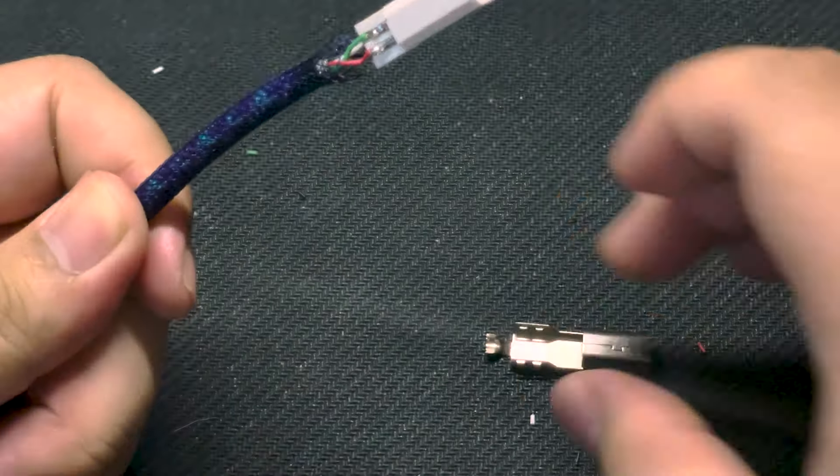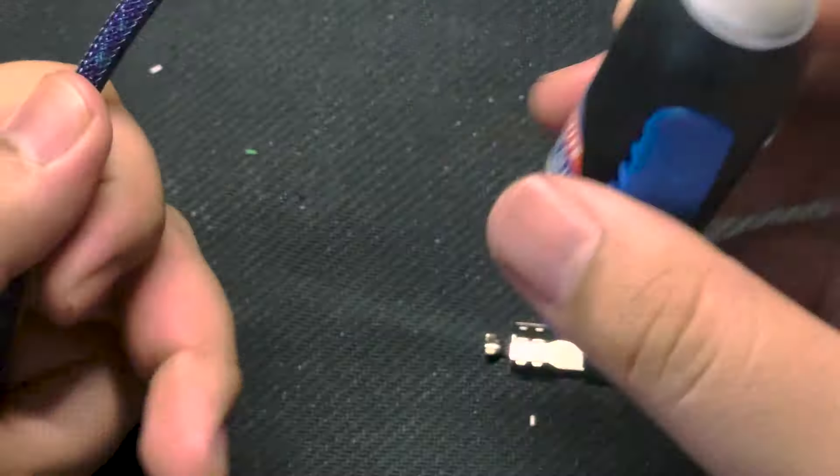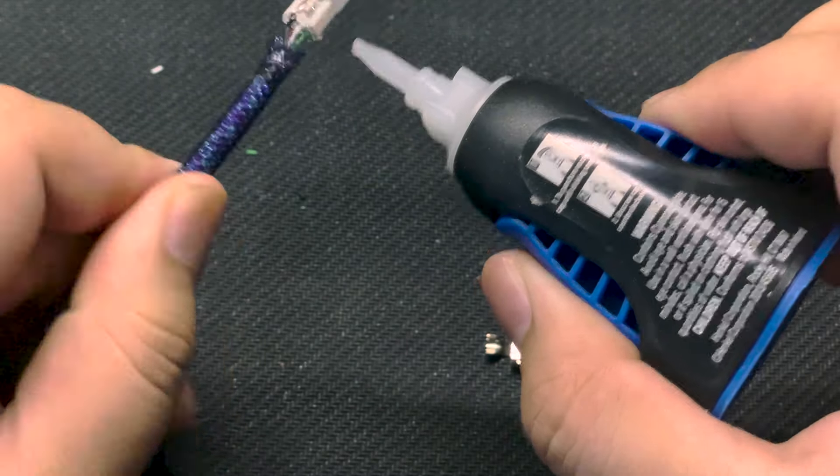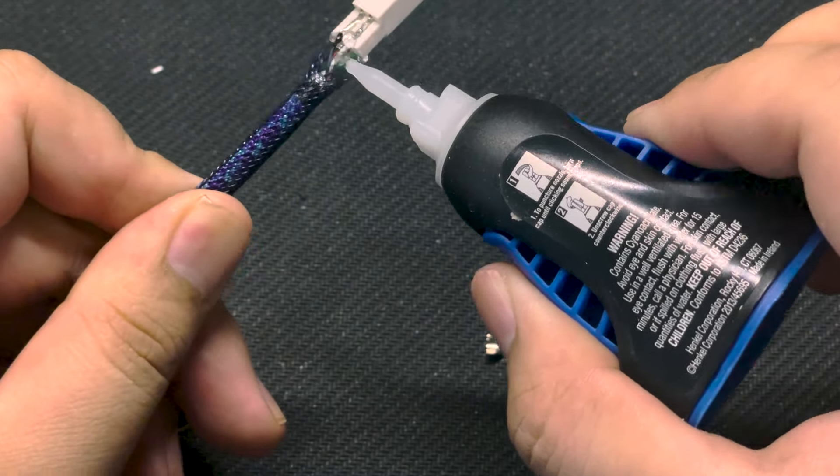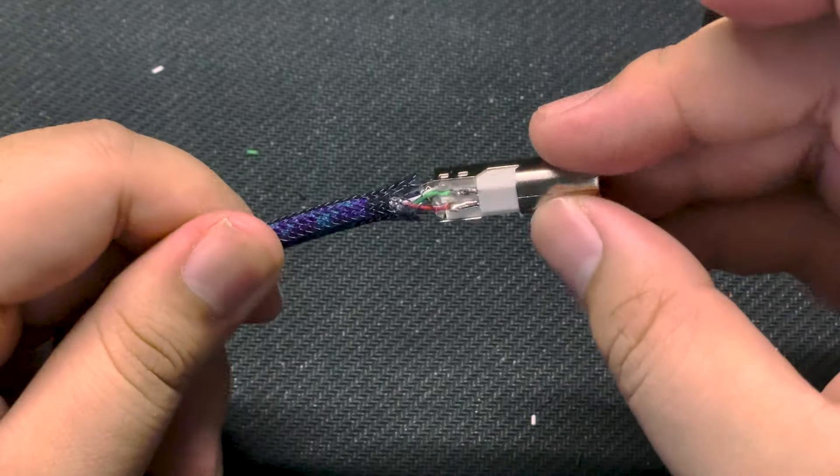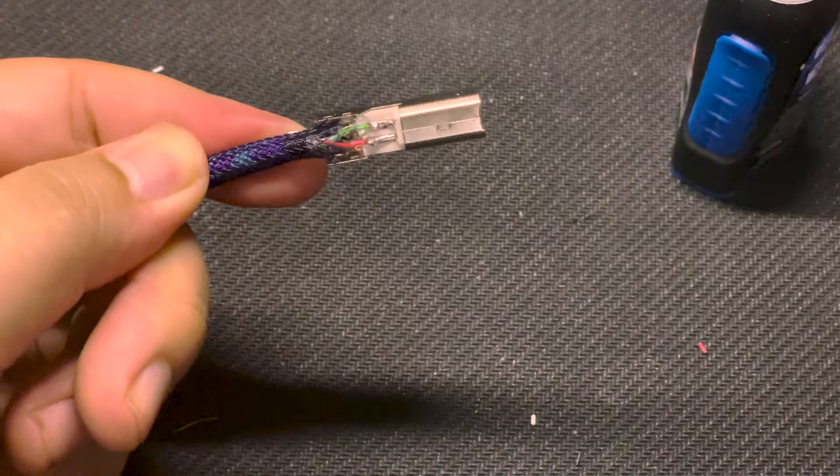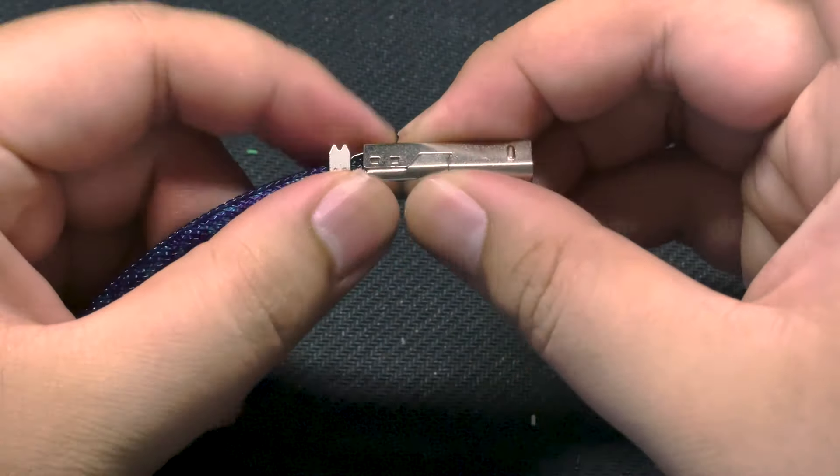Now that all the soldering is done, we can finally go ahead and put the housings on the connectors. But before doing that, I really like to add adhesive. It just makes these cables last so much longer. Honestly, since I started doing this I've had cables I've been using for years that haven't broken on me yet, so at least some good adhesive is a good thing to add before putting everything together.